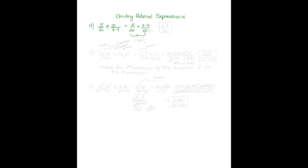Now we simplify. We can write ten as five times two, and since we have a five in the numerator, we cross out the five — it goes to one. Looking at the x in the denominator, we cannot cancel it because it is attached with subtraction and is not a standalone factor. Multiplying across, we get x minus four over two x times two, which is four x. This is our final answer; we cannot simplify further.